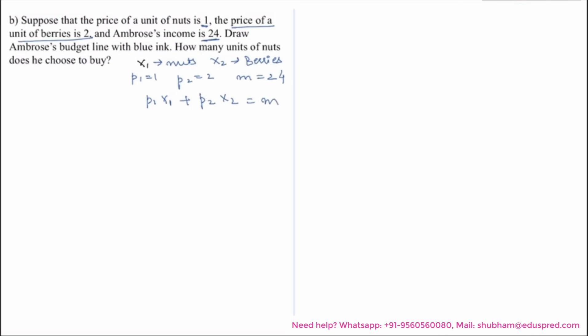We know the price of nuts is 1. So substituting the values of prices and income, we have the equation as 1 multiplied by X1 plus 2 multiplied by X2 equals 24. So that would be X1 plus 2X2 equals 24. So this is Ambrose's budget equation.